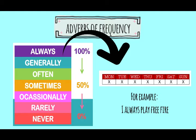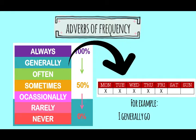Let's know them a little bit more. The first one is 'always' — something we do every day, todos los días. For example: 'I always play Free Fire' — yo siempre juego Free Fire. Then we have 'generally' — generalmente — something we do most days but not all, like: 'I generally go to school' — nosotros vamos generalmente al colegio, because we don't go on Saturdays or Sundays.